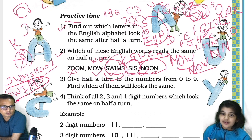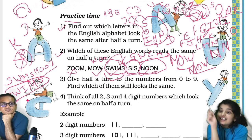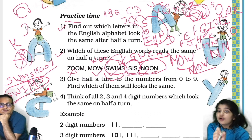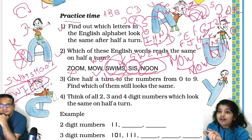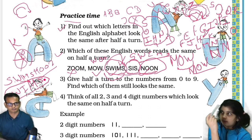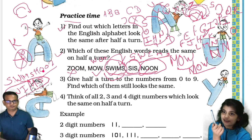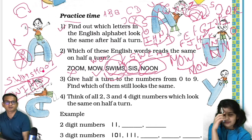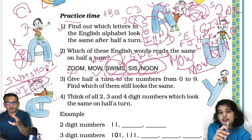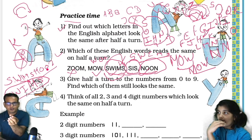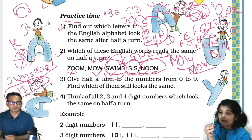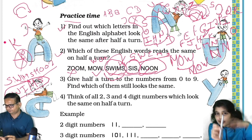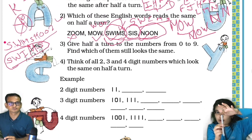I told it wrong before — we don't read it backwards, we just make the letters upside down (rotated) and then check. When you turn it like this — if this is a pen, you turn the pen like this. Let me explain: this is a pen and when you turn it this should come this way.